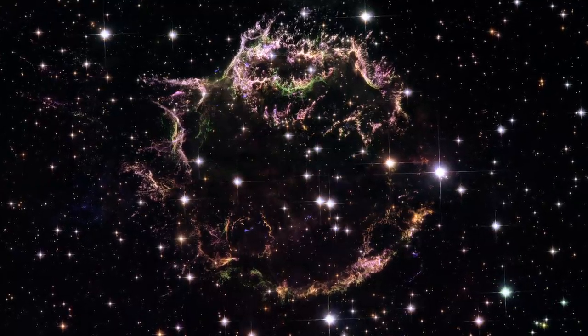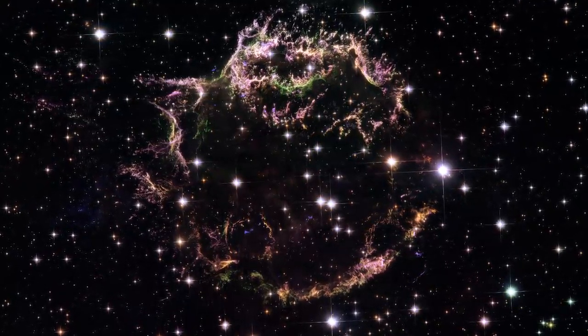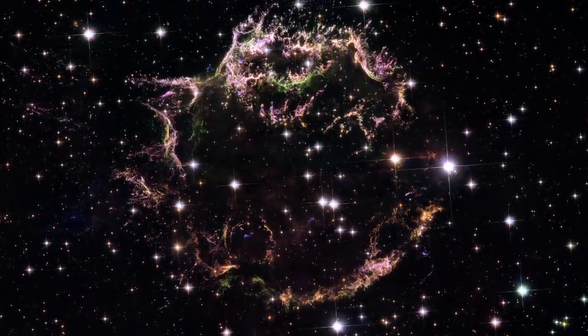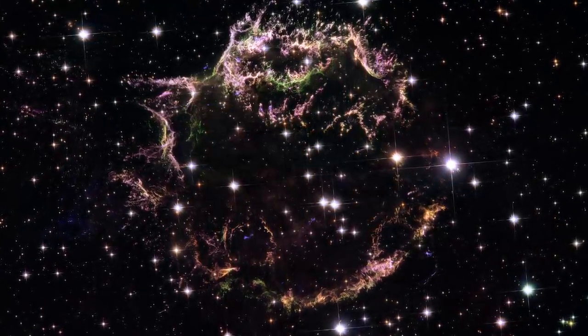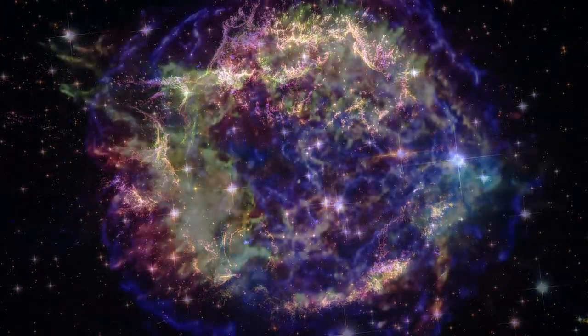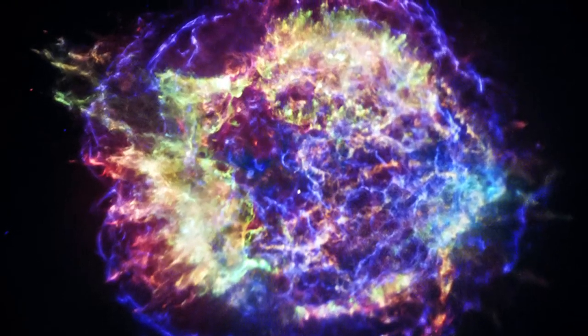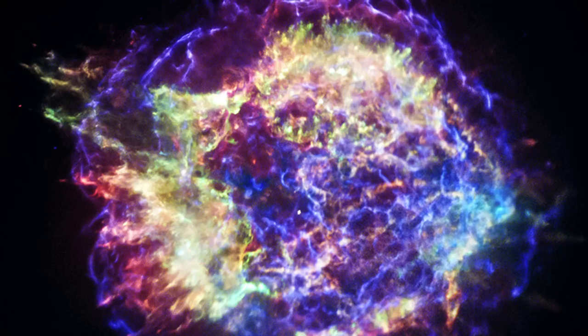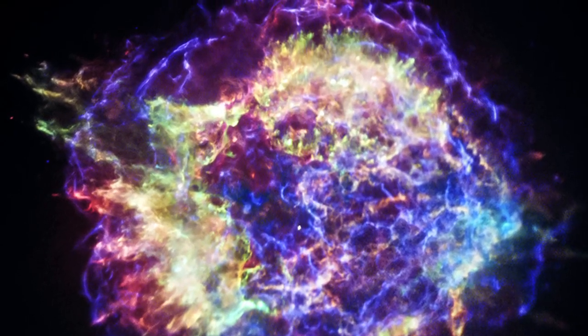Here is a Hubble Space Telescope image of Cassiopeia A. It shows the visible remnant of a supernova, glowing at about 10 or 20,000 degrees Celsius. Here is an image from the Chandra X-ray Observatory, showing gas heated to tens of millions of degrees.